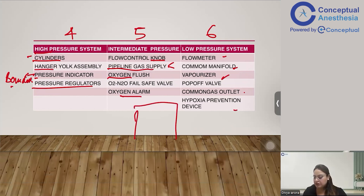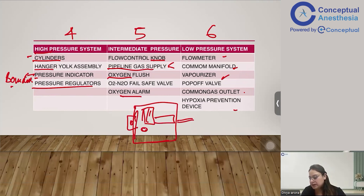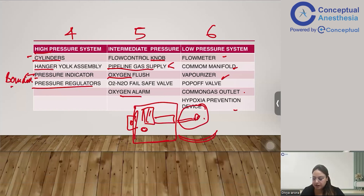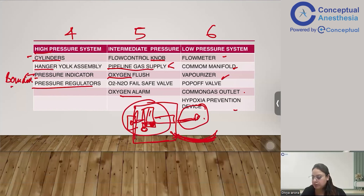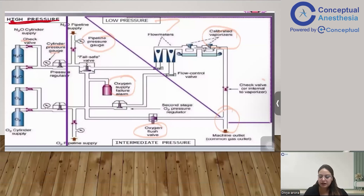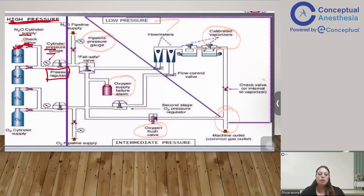To remember this diagrammatically: on the anesthesia machine you have flow meters, vaporizer, oxygen flush, and auxiliary oxygen at the front, and the cylinder at the back with the pipeline connection on the side. Starting from the back — cylinder, hanger yoke assembly, pressure indicator — that is the high pressure system. Everything at the front such as the flow meters, vaporizer, and common gas outlet are the low pressure system.